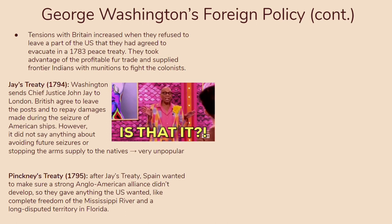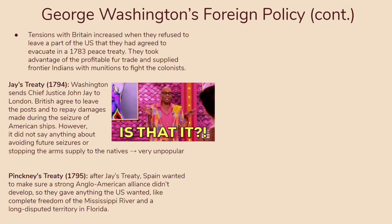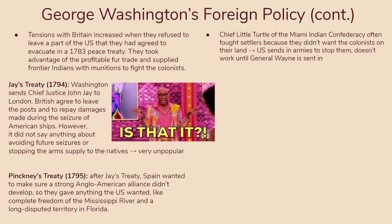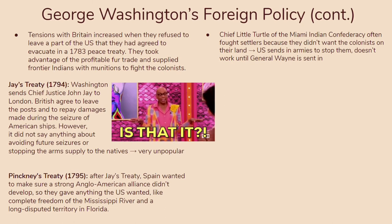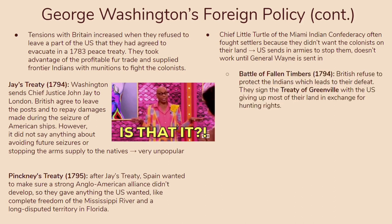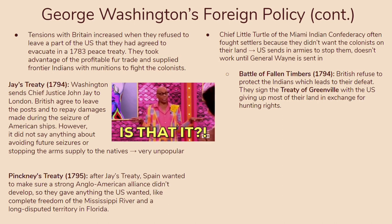Another treaty to know is Pinckney's Treaty in 1795, after Jay's Treaty. The Spanish wanted to ensure there wasn't a strong Anglo-American alliance, so they gave the U.S. anything it wanted — complete freedom over the Mississippi River and a long-disputed territory in Florida. Domestically, Chief Little Turtle of the Miami Confederacy often fought settlers who were encroaching on their land. The U.S. sent armies, but it didn't work until General Wayne was sent in, leading to the Battle of Fallen Timbers in 1794, where the British refused to protect the Indians, leading to their defeat.